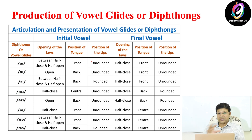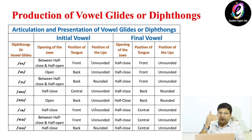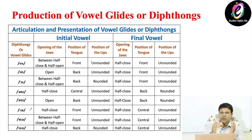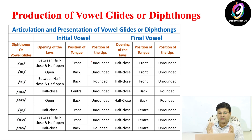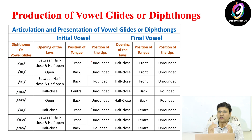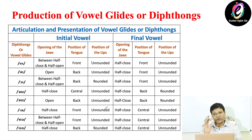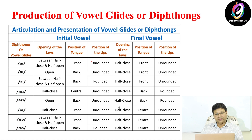There are 20 vowel sounds in total: 12 pure vowels or monophthongs, and 8 diphthongs or vowel glides. Thanks for watching. See you in the next video. Bye bye.